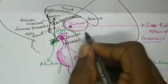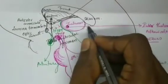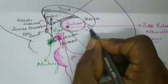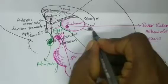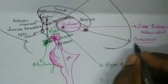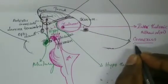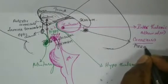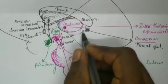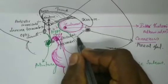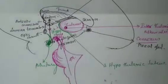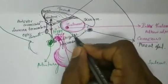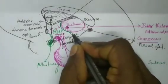The posterior part of the third ventricle is bounded by a gland located below the splenium called the pineal gland. As we come down there are parts of the midbrain which are the superior and the inferior colliculus.